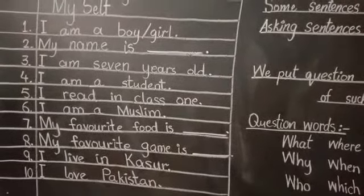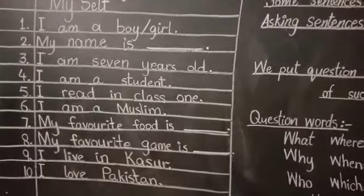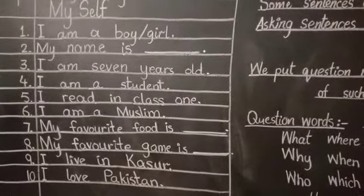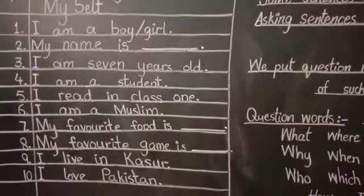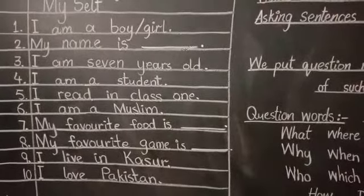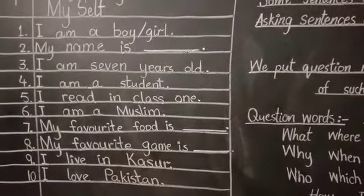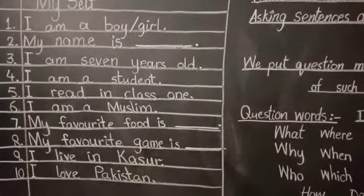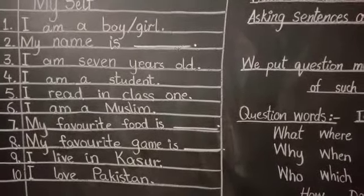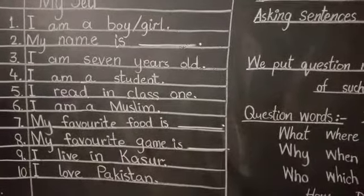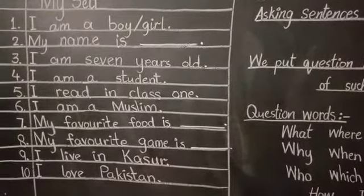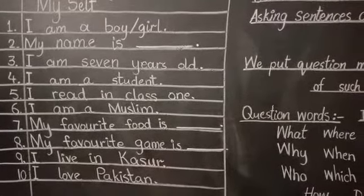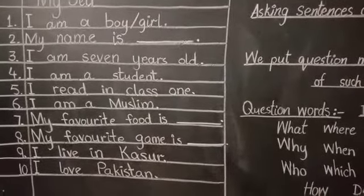Third sentence: 'I am seven years old.' Fourth sentence: 'I am a student.' Fifth sentence: 'I am reading class one.' Sixth sentence: 'My religion is ___' — write 'I am a Muslim.' Seventh sentence: 'My favorite food is ___.' Eighth sentence: 'My favorite game is ___' — you can write cricket, hockey, or video games.